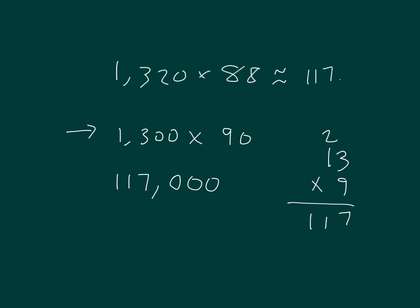Read my whole number sentence. 1,320 times 88 is about 117,000.